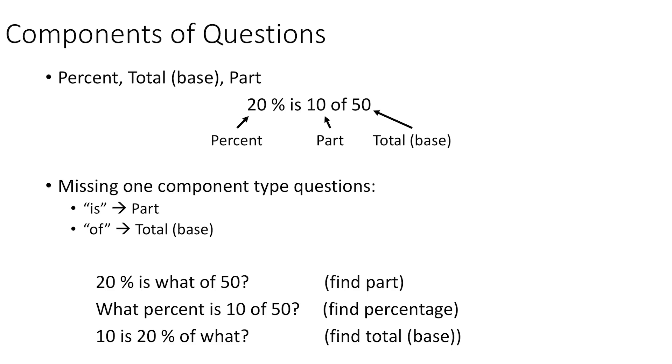So for these simple examples, if you pay attention to where the what is and what words go around it, you shouldn't have too much trouble figuring out what it is you're trying to find. And then you can use the ratio method or the formula method to calculate the answer.